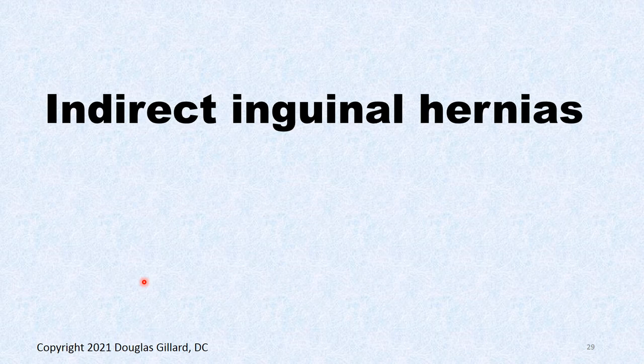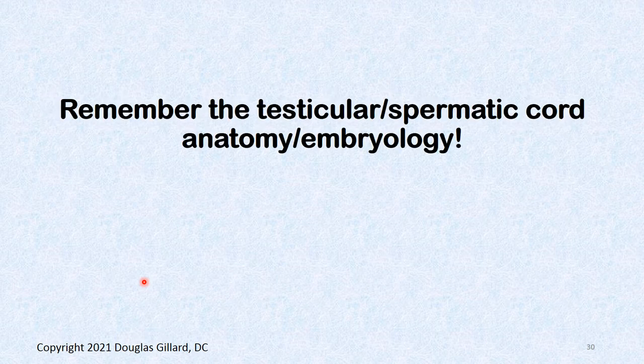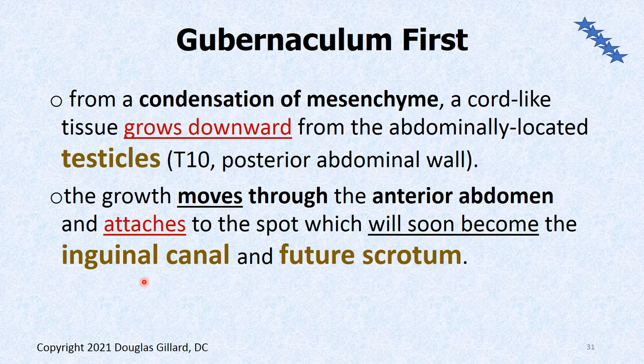Now let's get into indirect inguinal hernias and the embryology. This is always confusing. The two key terms to memorize are: gubernaculum and processus vaginalis. These are the stars of the show when it comes to testicular descent, forming the inguinal canal in males, and descending the round ligament in females.